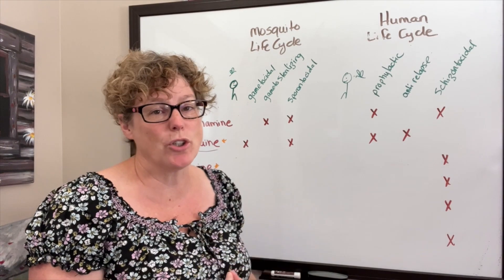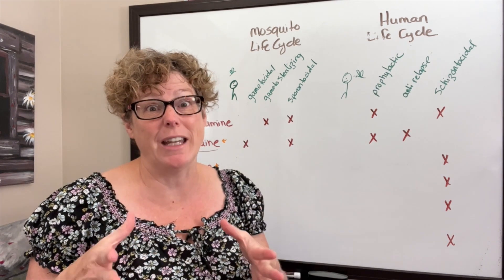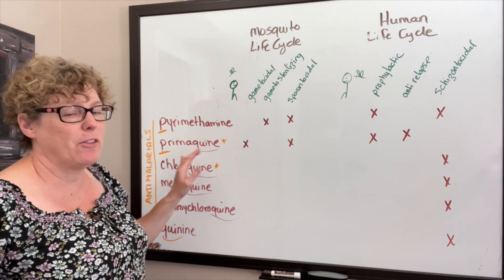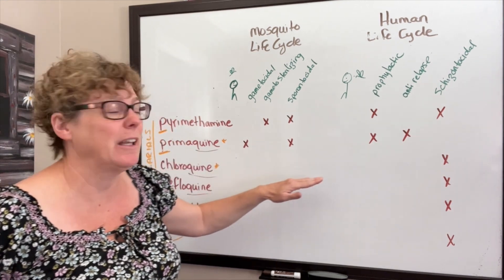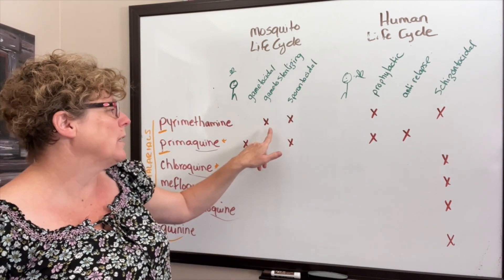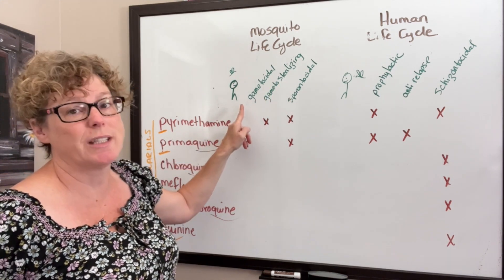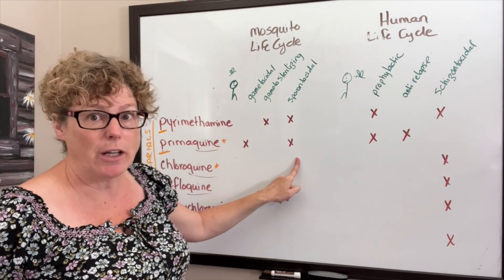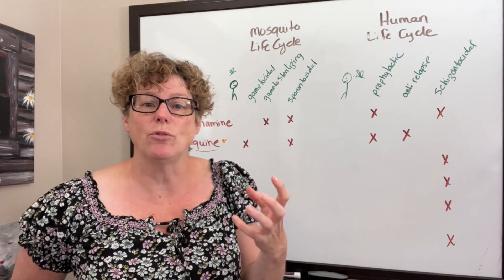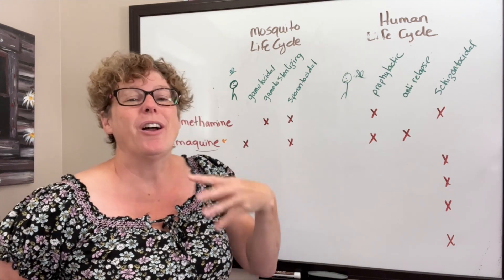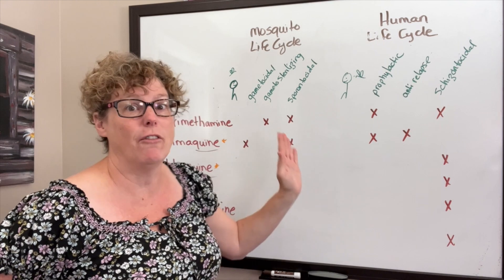This board shows where in the life cycle — whether in the mosquito or in the human — these medications have an impact. Pyrimethamine and primaquine are across the board, acting in both the mosquito and human life cycles. One difference is that pyrimethamine is a gametocyte sterilizing agent whereas primaquine is a gametocidal agent. Both are sporontocidal. When the mosquito takes the blood meal, it also takes some of that medication, which actively works inside the mosquito to halt the malaria cycle.